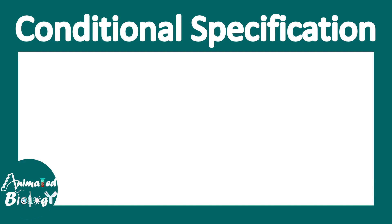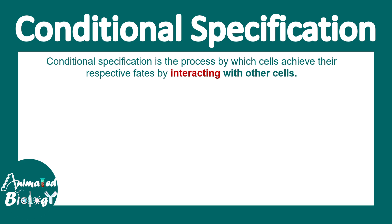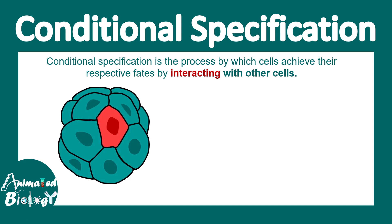In this video we'll talk about conditional specification, a very important topic in developmental biology. Conditional specification is the process by which cells achieve their respective fate by interacting with other cells in the vicinity. That means interaction matters — here is a red cell in an embryo, and what this red cell would eventually become is dependent on how it interacts with its neighbors.